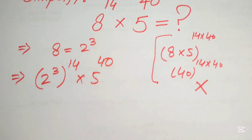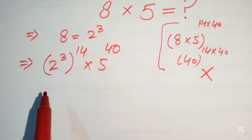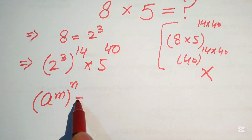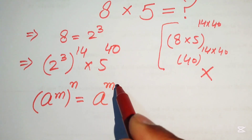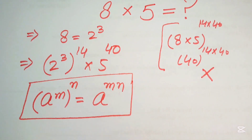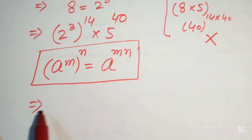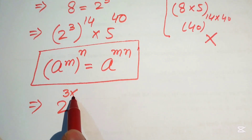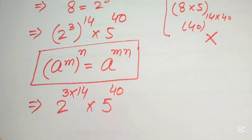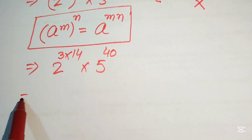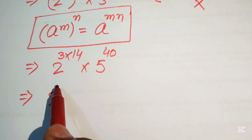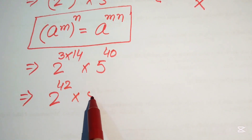We need to multiply the two exponents in the first term using the exponential law: a to the power of m, to the power of n, equals a to the power of m times n. Applying this rule, the first term becomes 2 to the power of 3 times 14, multiplied by 5 to the power of 40. Since 3 times 14 equals 42, we get 2 to the power of 42, multiplied by 5 to the power of 40.